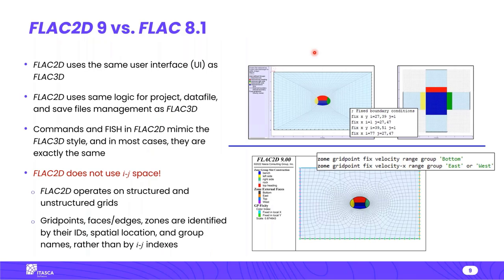What is the difference between FLAC 2D version 9 and FLAC 8.1? FLAC 2D uses the same user interface as FLAC 3D, the same logic for project data file and save file management, and commands and FISH in FLAC 2D mimic FLAC 3D style — in most cases they are exactly the same. When switching from FLAC 8.1, FLAC 2D will feel and work very similarly to FLAC 3D.